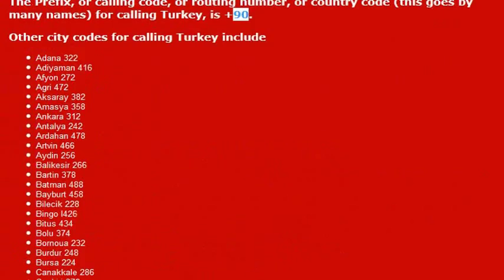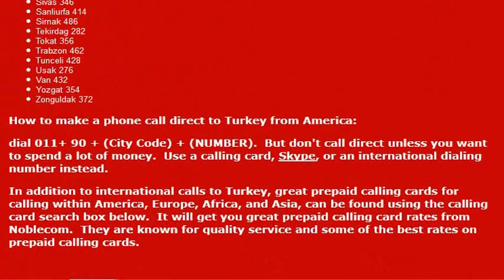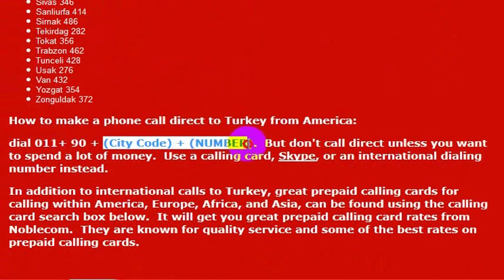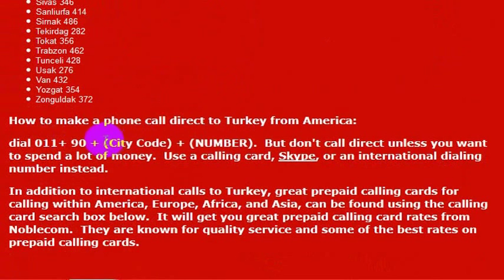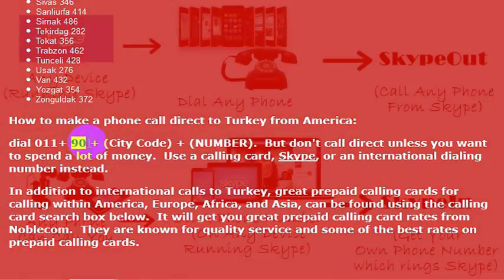If you want to call Turkey directly, you can see all of these city codes that I'm scrolling by super fast. Those are all city codes in Turkey, but that's probably included in the phone number that you have for your friend or family. So you would just dial 0-1-1, then 9-0, and then the city code and the number that you're trying to reach. The city code is probably included in the phone number, but you would need to know the country code for Turkey, which is 9-0.